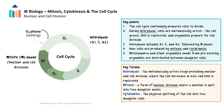The cell cycle is tightly regulated by a series of checkpoints and molecular mechanisms, primarily involving proteins called cyclins and cyclin-dependent kinases. These checkpoints ensure the cell only proceeds to the next phase if conditions are favourable and previous processes have been accurately completed. Key checkpoints include G1, G2, and M checkpoints. Disruptions in the regulation of the cell cycle can lead to uncontrolled cell division, which is a hallmark of cancer. Understanding the precise relationship between cell division and the cell cycle provides insights into how errors in these processes can lead to diseases such as cancer.